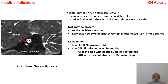The most important criteria for CI in cochlear nerve aplasia: if you find any auditory behavioral response, try CI. If there is no progress, go for ABI. Some surgeons do CI and ABI simultaneously or sequentially. The CI should be done on the side with better hearing or the better cochlear nerve.